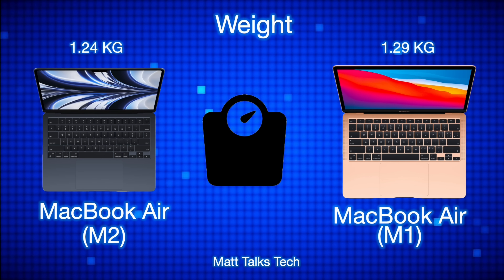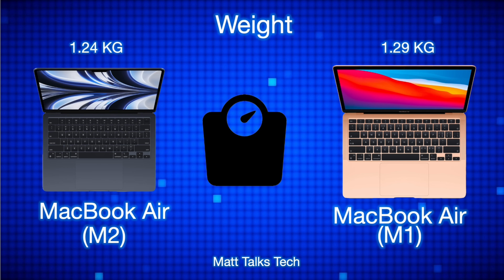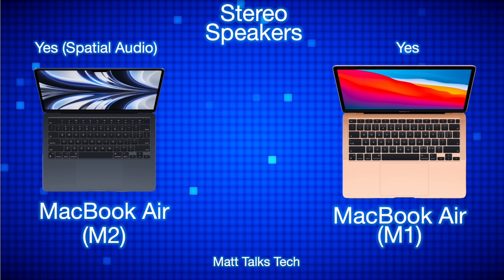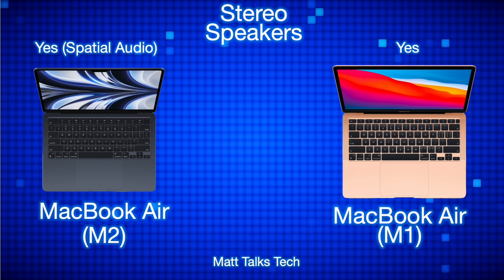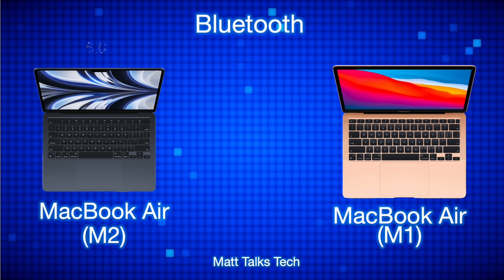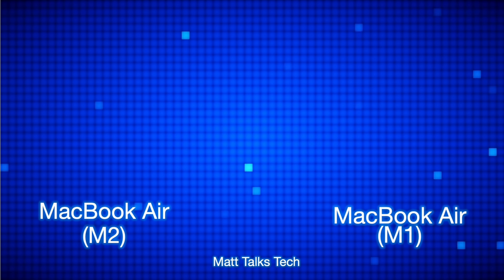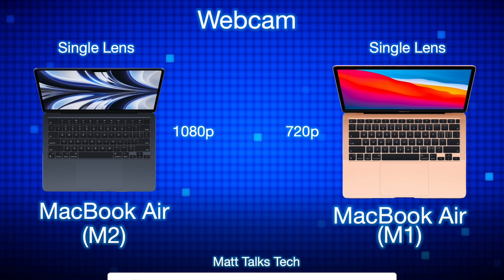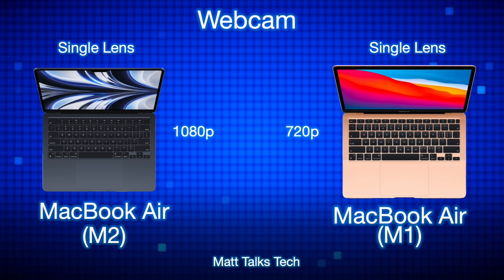Weight-wise, the MacBook Air M2 is ever so slightly lighter — 1.24kg versus 1.29kg for the M1. Both have stereo speakers, but the M2 adds spatial audio. Bluetooth is identical at 5.0 on both. The webcam has been upgraded — the M2 now has a 1080p webcam compared to the 720p webcam on the M1.